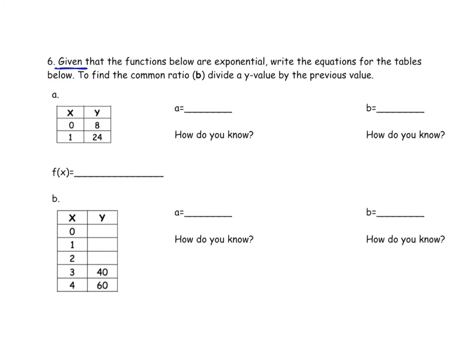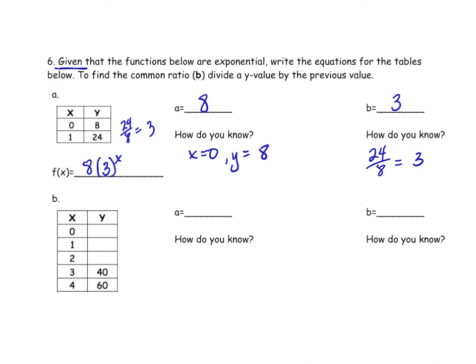Given that the functions below are exponential, to figure out our multiplier we divide a Y value by its previous Y value. So 24 divided by 8 gives us 3 — that's our B value, because 8 times 3 is 24. Our A value is where X equals 0, so A is 8. That's where X equals 0, or Y equals 8. So our equation is 8 times 3 to the power of X.